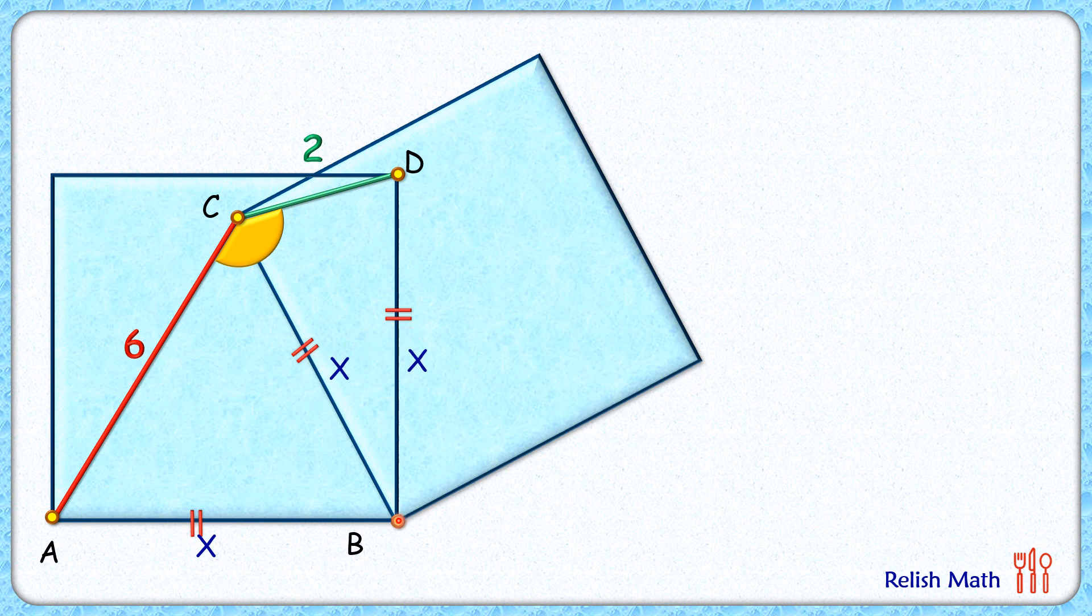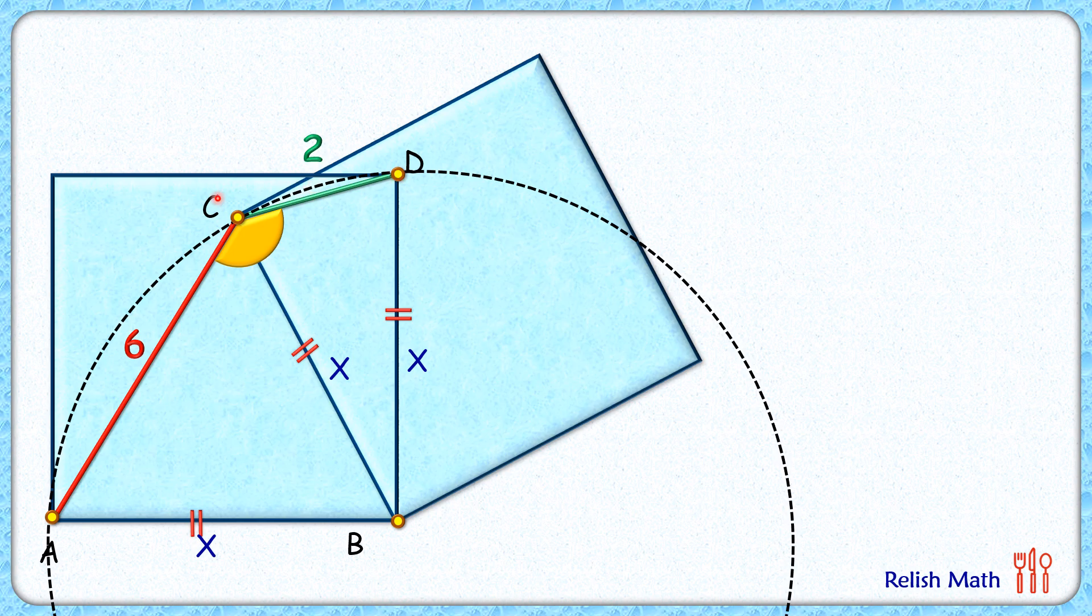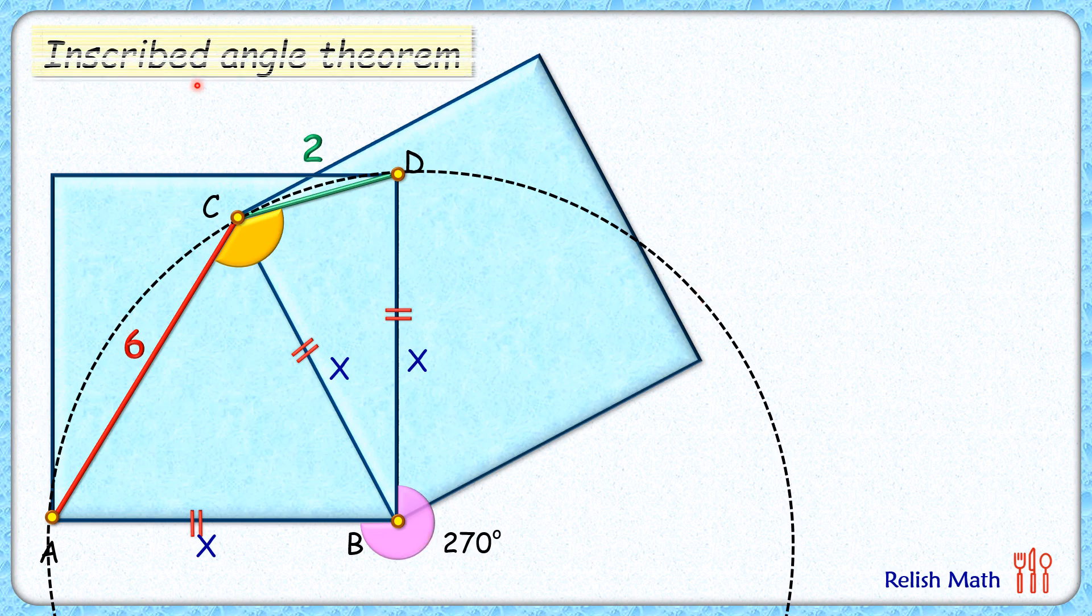Now with B as the center and x centimeters as a radius, we can draw a circle which will pass through points D, C, and A. Now, this angle is 90 degrees, so the exterior angle—that is, this angle—will be 270 degrees. Now in this circle, let's apply the inscribed angle theorem.